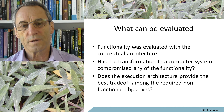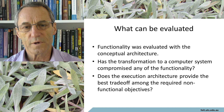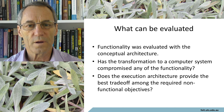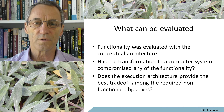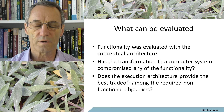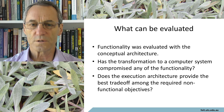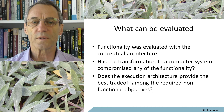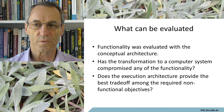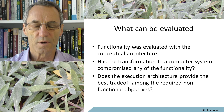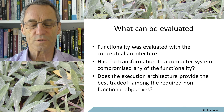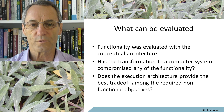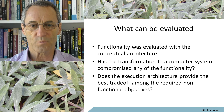The next thing we'd want to evaluate is: have we got the best trade-off among the non-functional characteristics that we can? The execution architecture is where you implement those — where these are determined, or how their provision is determined. So clearly, if this is where it happens, then we probably ought to have a look at whether it has happened, and whether it has happened well.